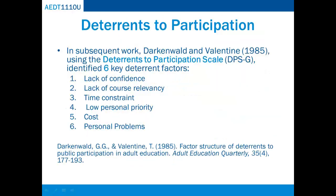In subsequent work, Darkenwald and Valentine, using the Deterrence to Participation Scale, identified six key deterrent factors: 1. Lack of confidence; 2. Lack of course relevancy; 3. Time constraints; 4. Low personal priority; 5. Cost; and 6. Personal problems.